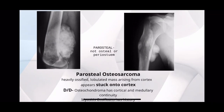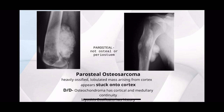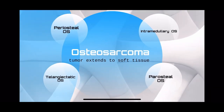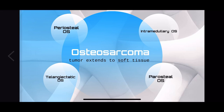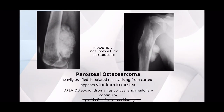In paraosteal osteosarcoma, as the name suggests, it is not from the bone itself — it's from the parosteal tissue, not even from the periosteum. Do not confuse paraosteal and periosteal. It looks like a tumor which is just stuck on the bone from outside — heavily ossified and lobulated like a cauliflower arising from the cortex. You can sometimes confuse it with myositis ossificans or osteochondroma.